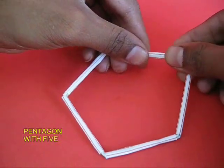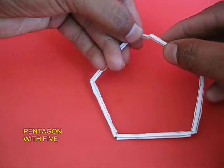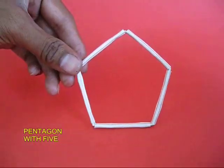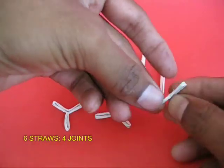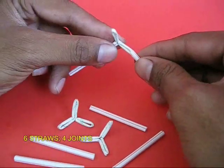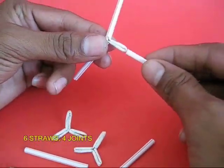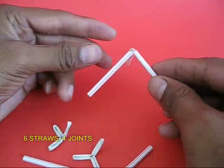Add one more straw to make a regular pentagon. Now with six straws and four joints of three, you can make a very lovely tetrahedron.